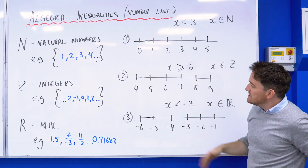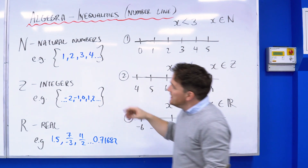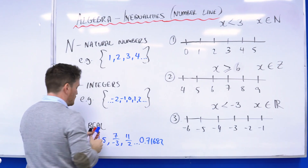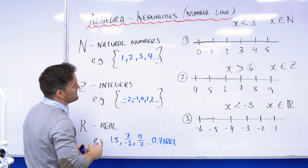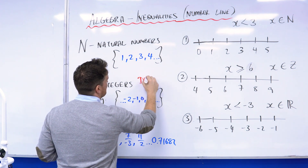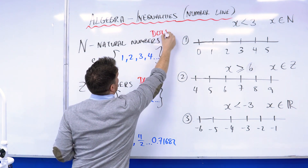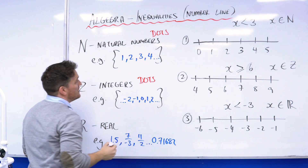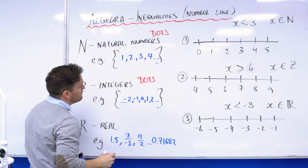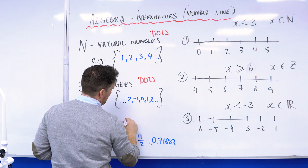Let's take one last look at a few things before the examples. For natural numbers and integers, whenever we're drawing these on our number lines we're going to use dots — or points. For real numbers, we're going to use a line and an arrow.